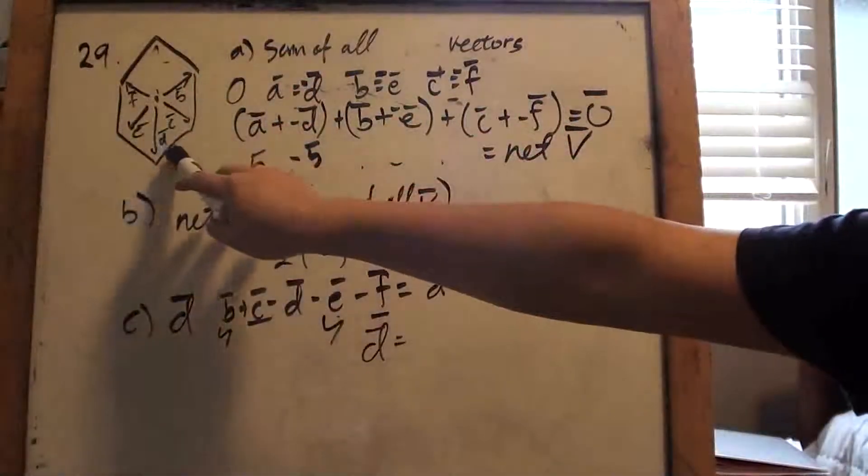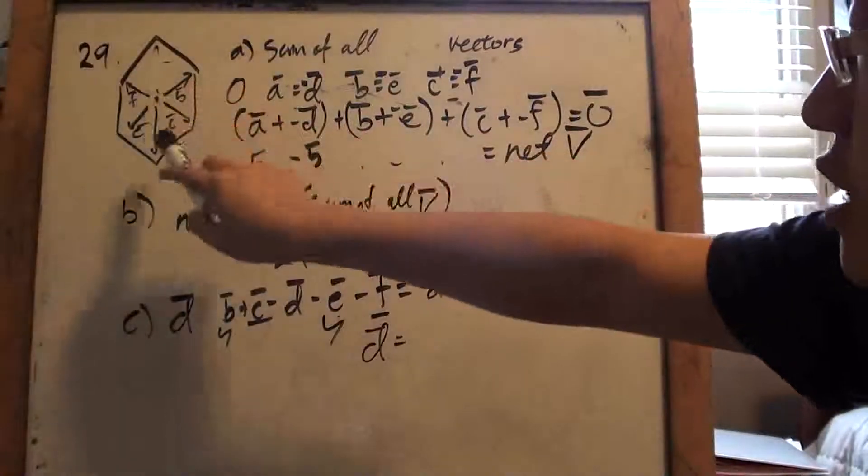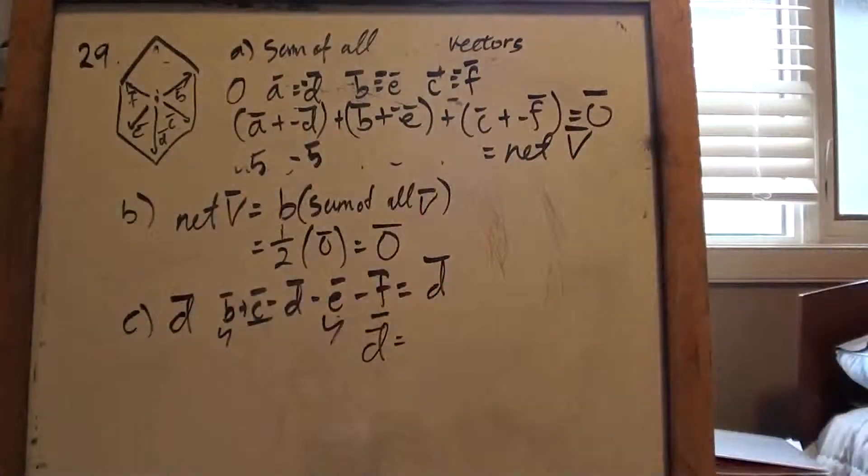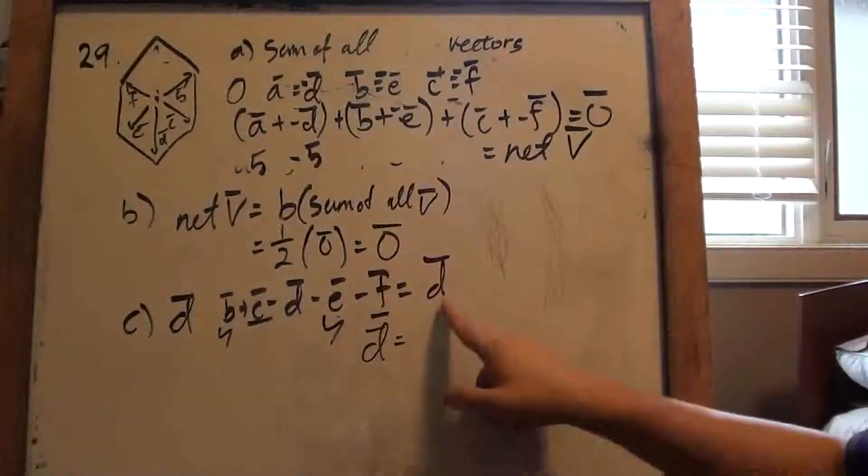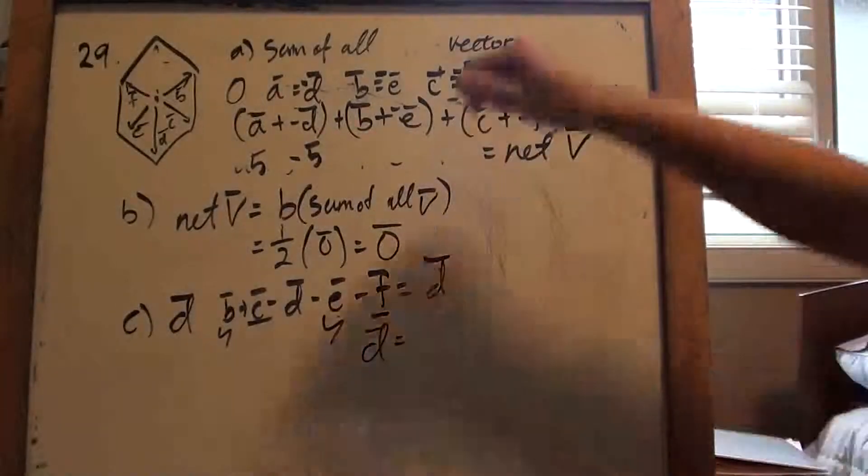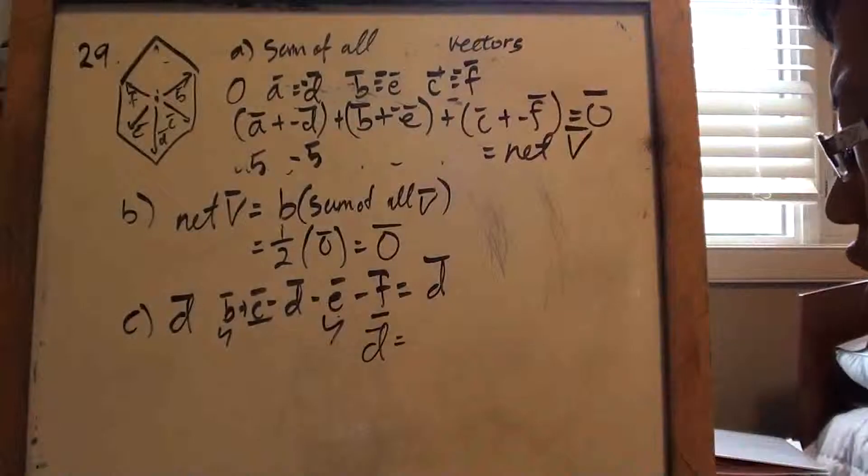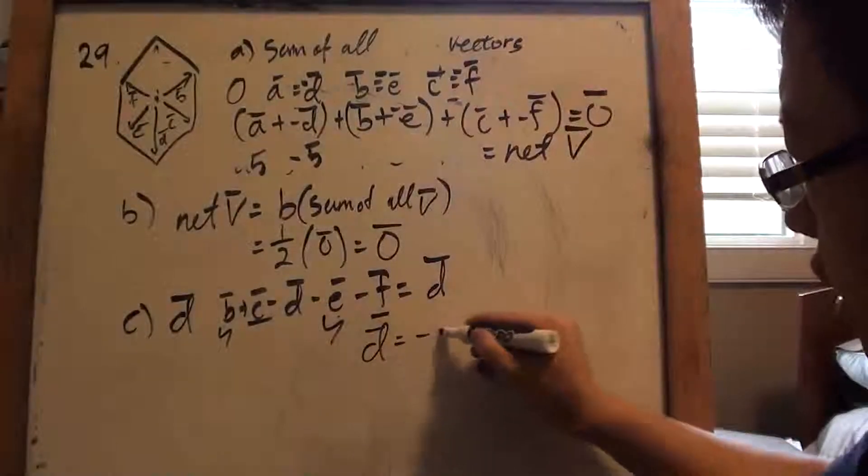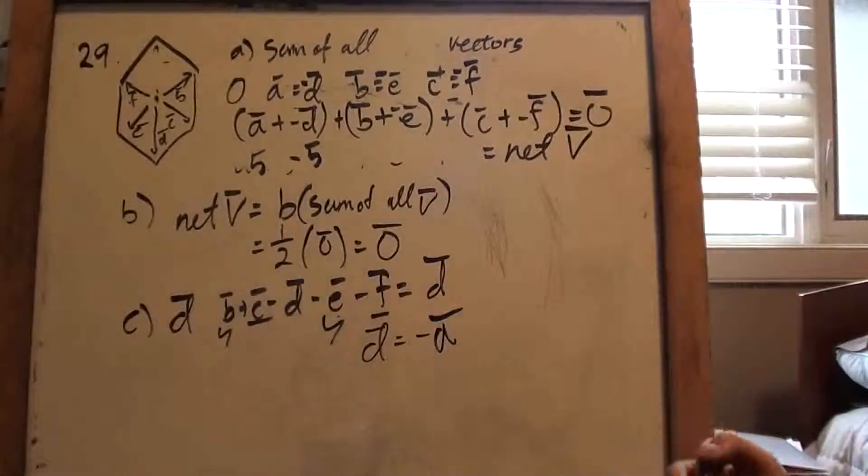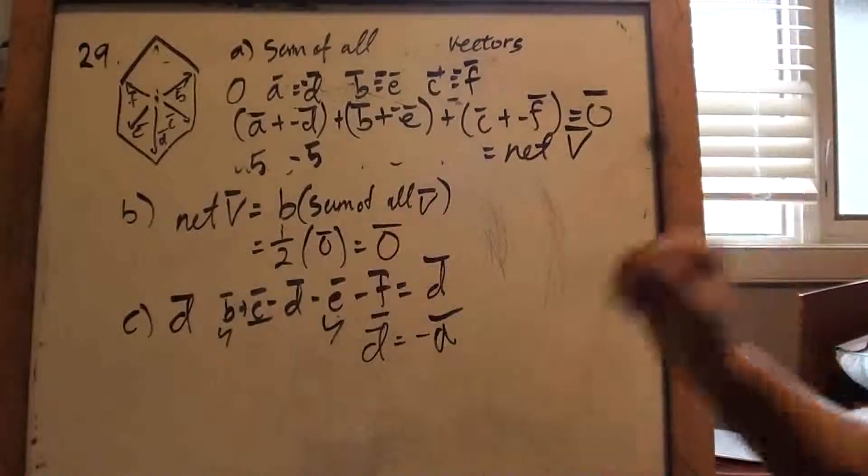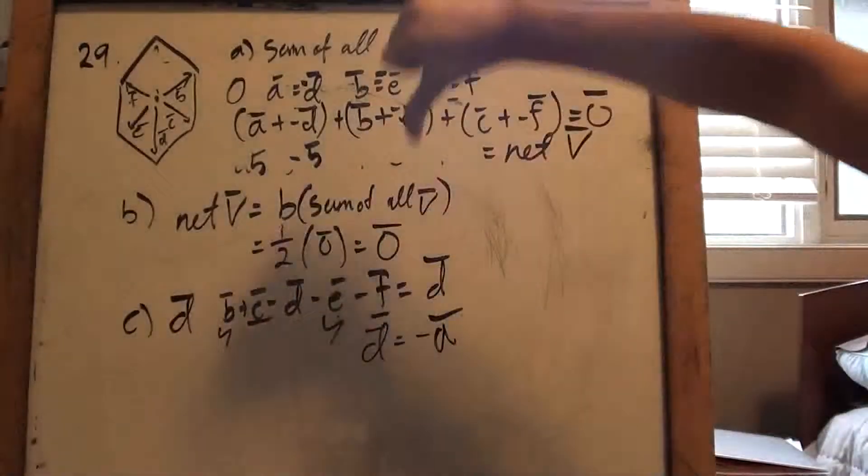But, the D has nothing, A is not there to cancel out D anymore, so D will remain, right? So, it will be whatever D is, right? So, the answer will be D. And D is going down, so, it's either D, or you could also say negative A vector. Really, it doesn't matter.